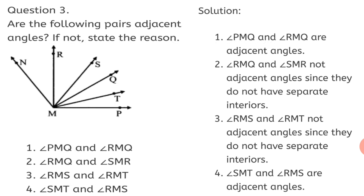Question 3: Are the following pairs adjacent angles? If not, state the reason. First pair — Angle PMQ and Angle RMQ: MQ is the common arm, M is the common vertex, and they have separate interiors. So Angle PMQ and Angle RMQ are adjacent angles.